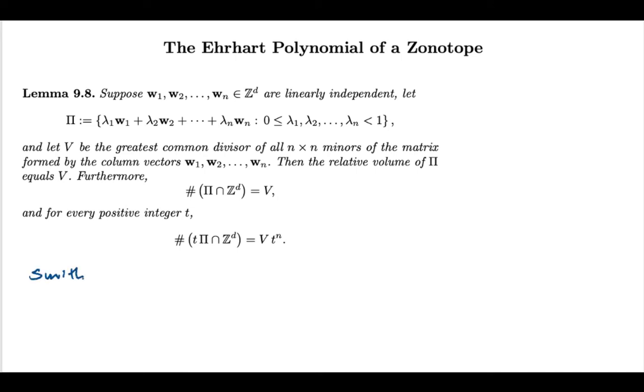So this result follows from a linear algebra result. It's a construction that's called the Smith normal form of a given matrix. To apply this over here, I'm thinking of my matrix as given by these column vectors W1 through WN. So this will be a D by N matrix.